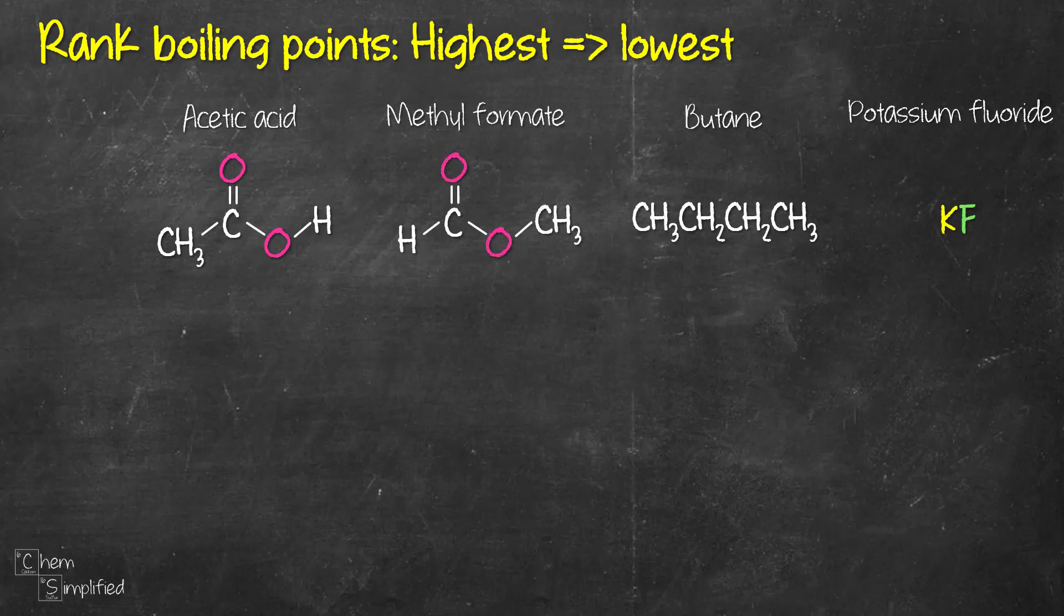When we're trying to rank the boiling points of compounds, we need to compare apples to apples. All these compounds right here have pretty much the same molar mass. Just in case you don't know what molar mass is, it's the mass for one mole of the compound. So for the four compounds that we have right here, their molar mass ranges from 58 to 60. That's close enough for us to work with.